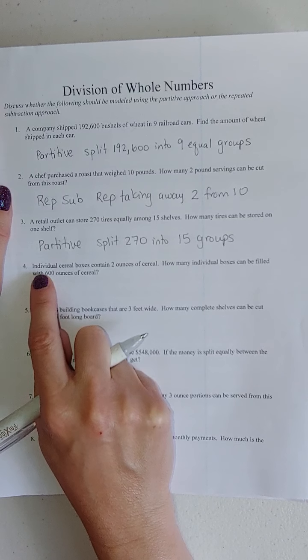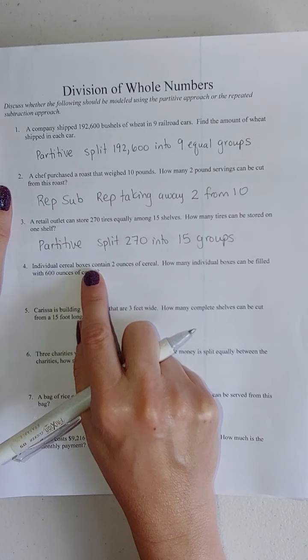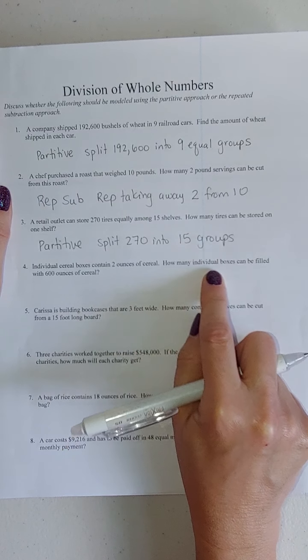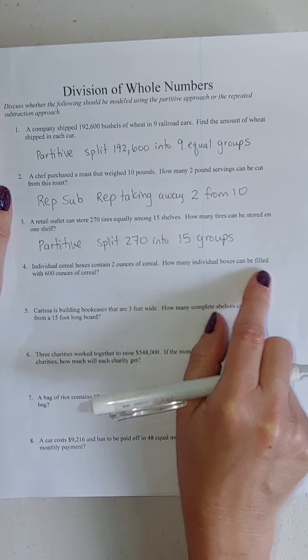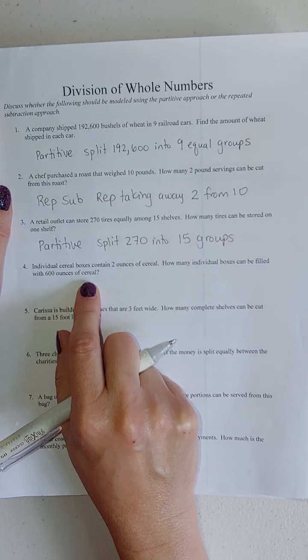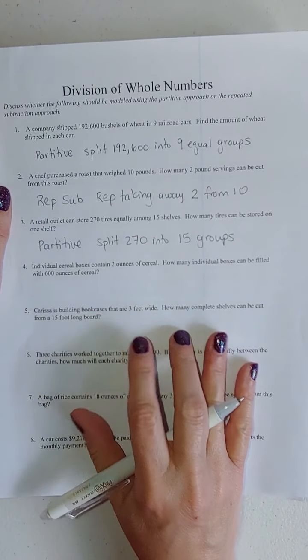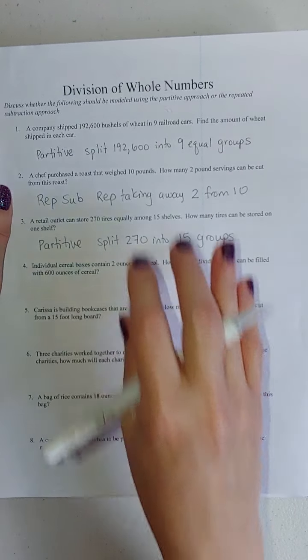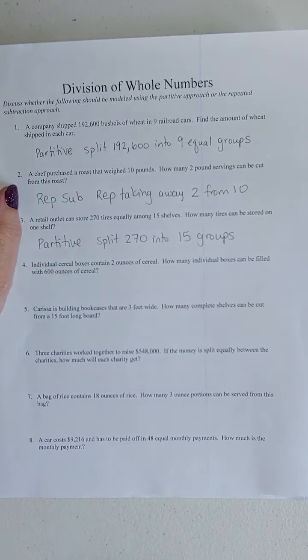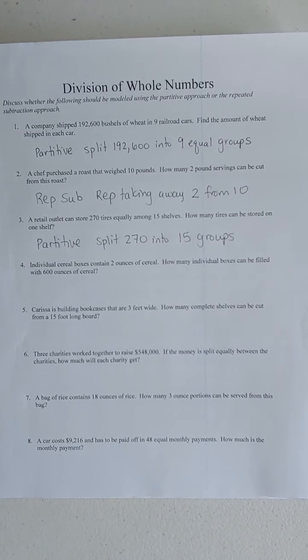Number four, individual cereal boxes contain two ounces of cereal. How many individual boxes can be filled with 600 ounces of cereal? If you didn't know where to start before, now that I've done three of them, go ahead and pause the video and see if you can do the rest of them. See if you can classify it as either partitive or repeated subtraction.